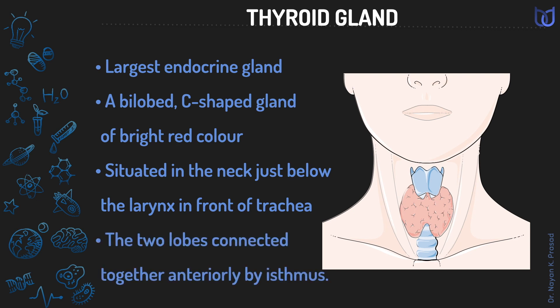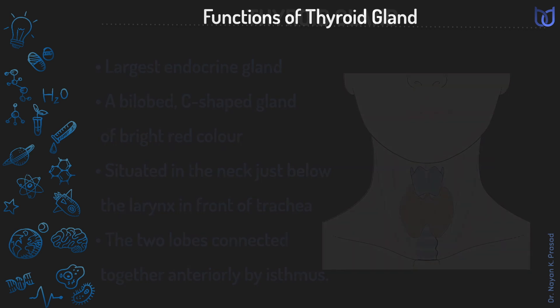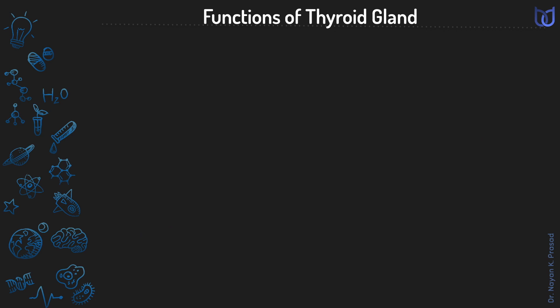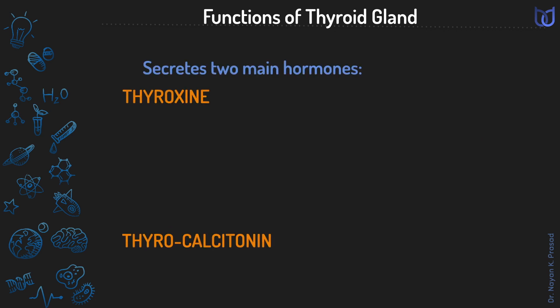The thyroid gland is composed of two lobes connected together anteriorly by a band of thyroid tissue called the isthmus. The thyroid gland secretes two main hormones: thyroxine and thyrocalcitonin, also called calcitonin.